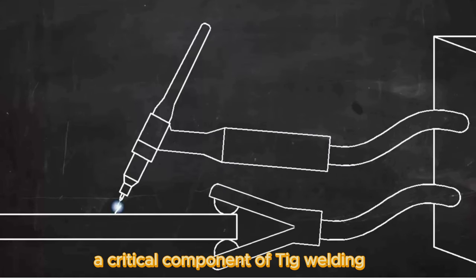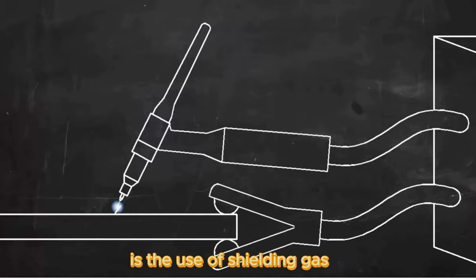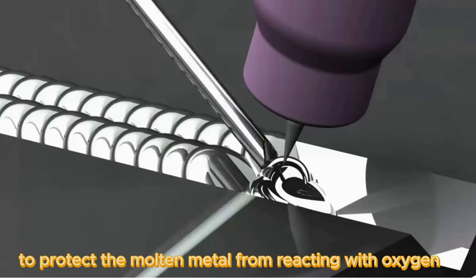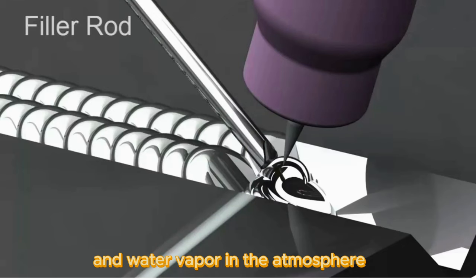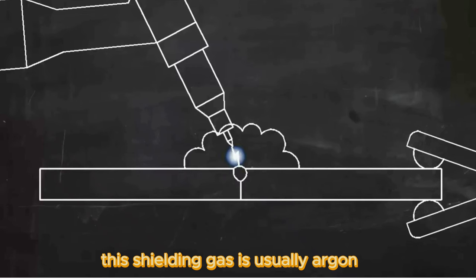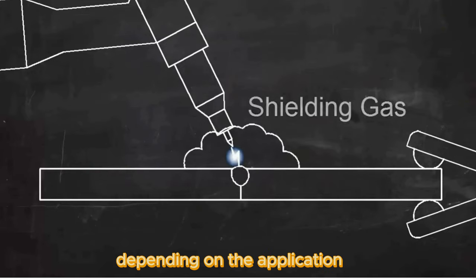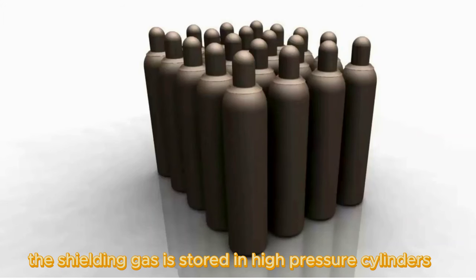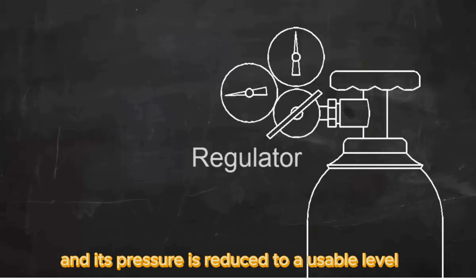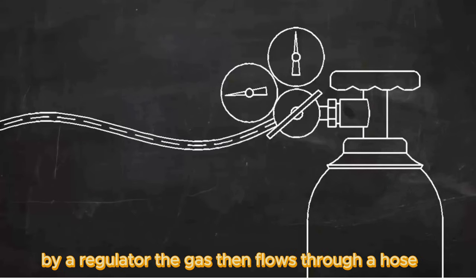A critical component of TIG welding is the use of shielding gas to protect the molten metal from reacting with oxygen and water vapor in the atmosphere. This shielding gas is usually argon, but helium or other gases can also be used depending on the application. The shielding gas is stored in high-pressure cylinders, and its pressure is reduced to a usable level by a regulator.